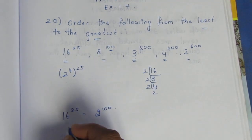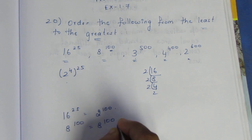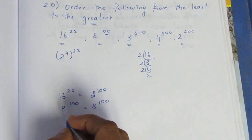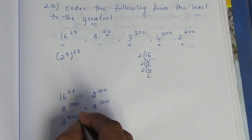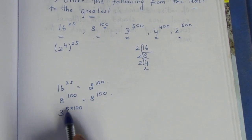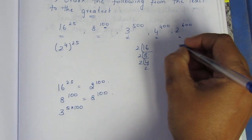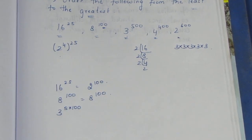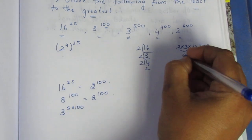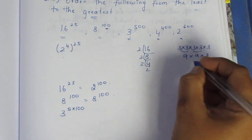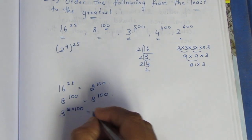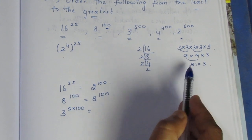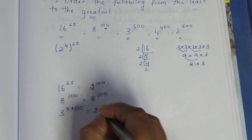Next, 8 power 100 stays as 8 power 100. Now let's convert 3 power 500. We write 500 as 5 times 100, so 3 power 500 equals 3 power 5, whole power 100. Now 3 power 5 means 3 times 3 times 3 times 3 times 3 — that is 243. So 3 power 500 equals 243 power 100.